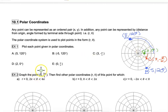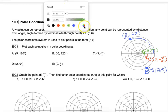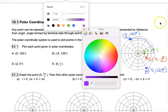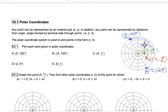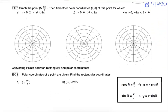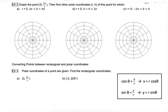Point E has a radius of 0 and an angle of pi over 4. When the radius is 0, we end up at the origin regardless of what the angle is. So even though pi over 4 would be halfway between 30 and 60 degrees, because the radius is 0, we land at the origin. This is point E at 0, pi over 4. Hopefully that makes sense for plotting points. Now we'll explore some equivalencies within the polar coordinate system.